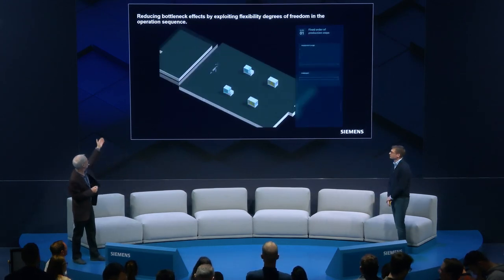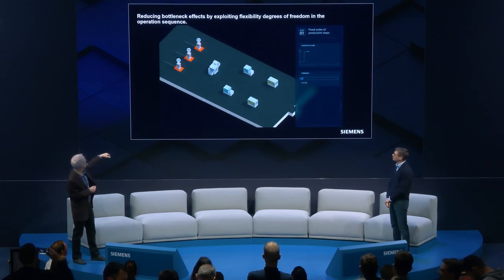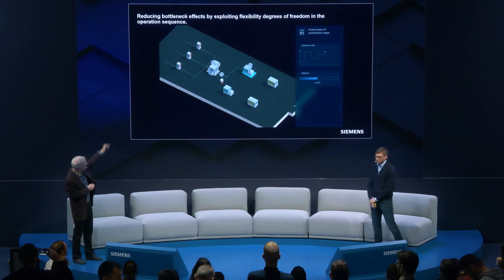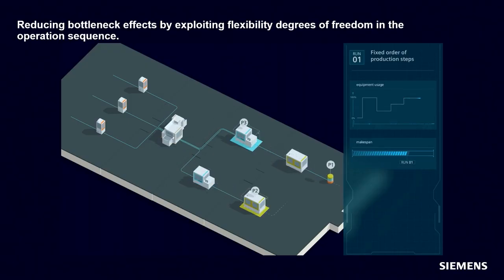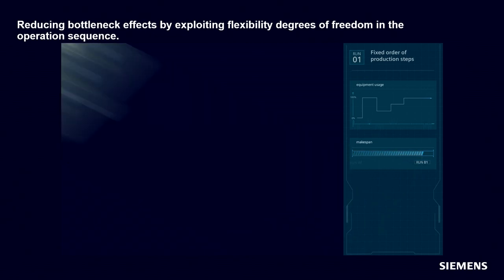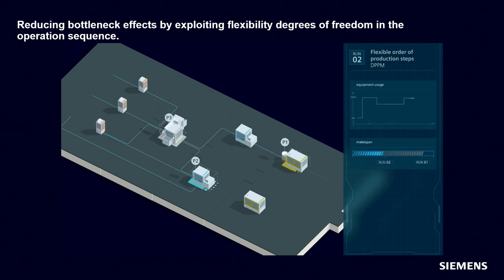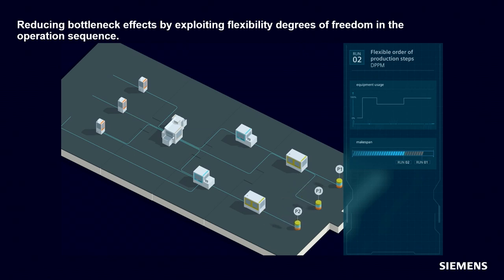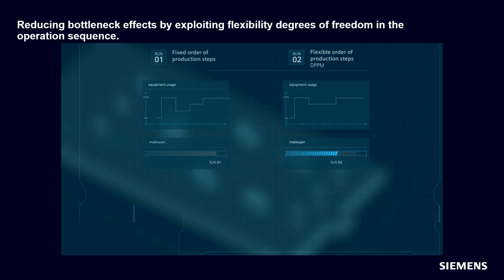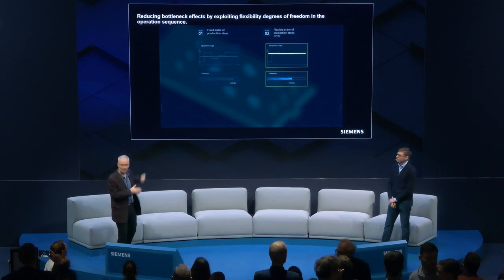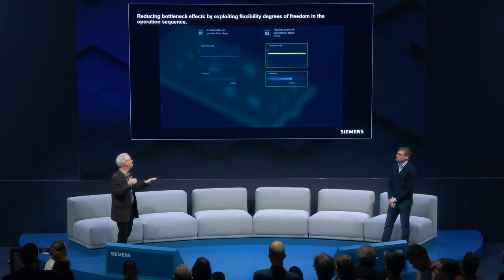It has a very simple production setup — just a few machines symbolically represented, and just three products which all have to go through this one big machine in the middle. A queue develops, a bottleneck effect occurs, production is slowed down, and your make span — your total production time — is more than optimal. However, suppose that product P3 has flexibility: it can first do the production step on the light blue machine before going to the big machine. The queue dissolves, there is no more delay, and therefore the overall make span is improved and equipment usage is also enhanced. DPPM is able to detect this flexibility degree of freedom automatically and make use of it for optimization.